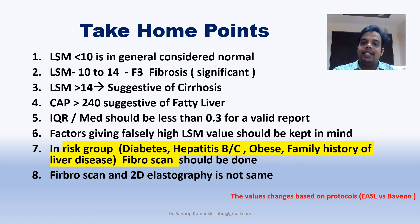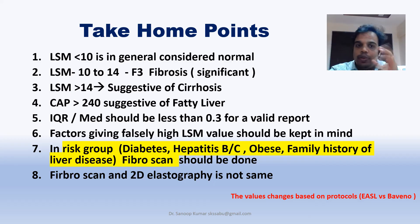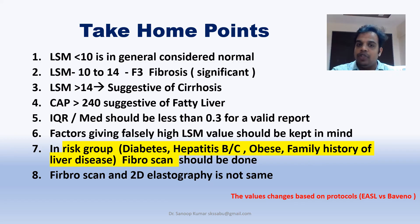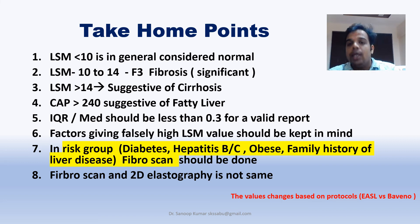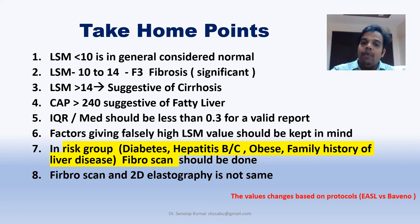Take-home messages: LSM less than 10 KPA can generally be considered normal. CAP or UAP value more than 240 indicates fatty liver or steatosis; more than 300 means significant steatosis. IQR per median ratio less than 30% is required for a valid report — if more than 30%, the report must be repeated. Risk groups who should be evaluated with Fibroscan or FibroTouch include patients with diabetes, poorly controlled metabolic illness, hepatitis B or C carriers, family history of early liver disease, or coronary artery disease.